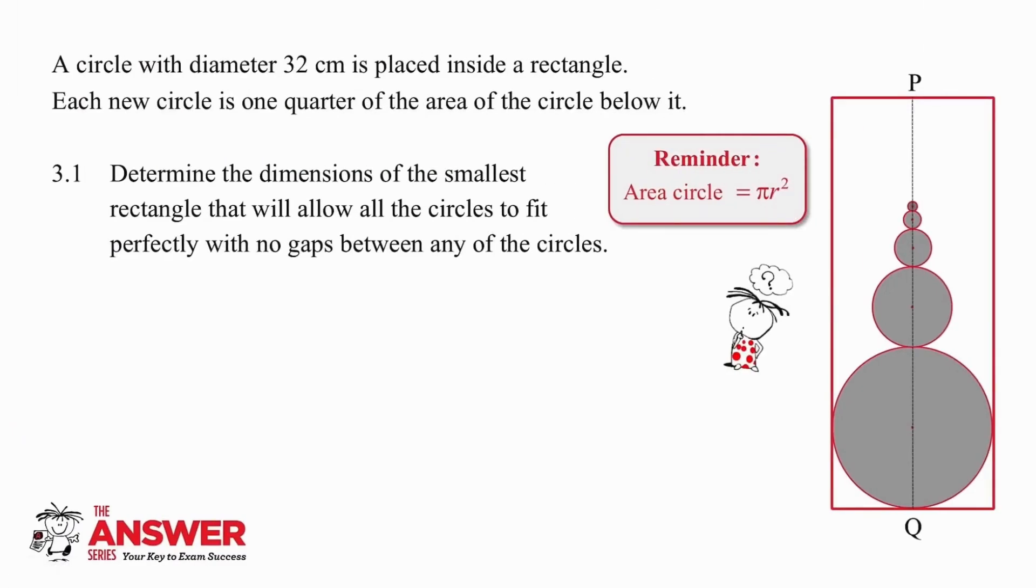So in the first question, what you need to think about is the fact that you can actually work out the area of the circle. We know that the area of the circle is given by pi r squared and if the diameter of the large circle is 32 then its radius must be 16. So to start with, we have a circle with area pi times 16 squared, which is going to give us 256 pi. If we take a quarter of that, we will get a value of 64 pi, which means that if our radius for the first circle was 16, then the radius for the second circle must be 8 because radius squared is 64. I want you to pause the video and finish the question on your own now.